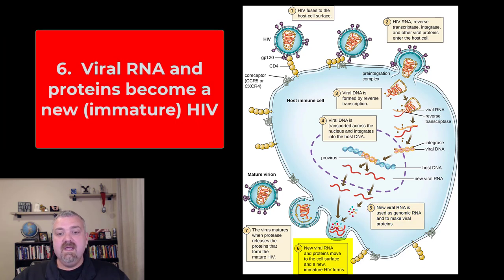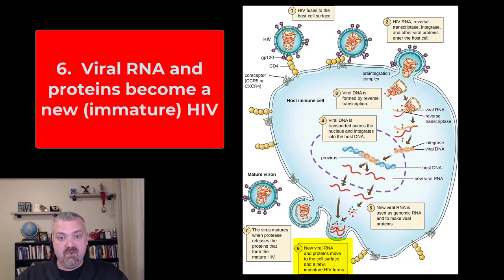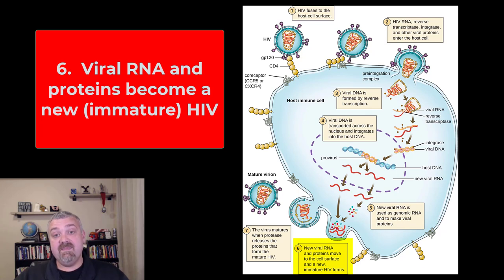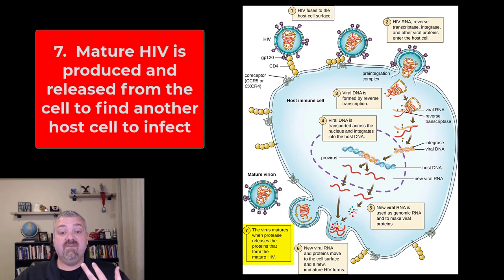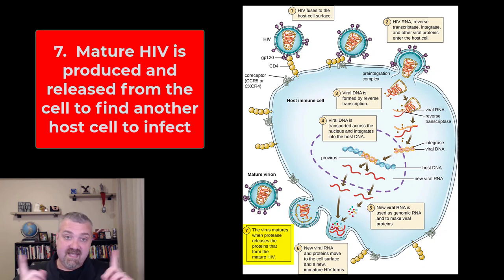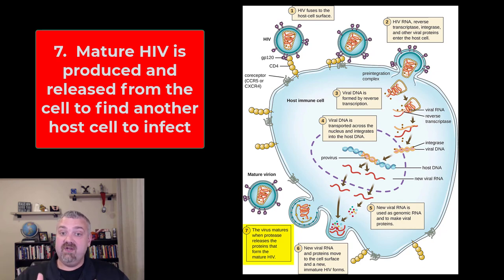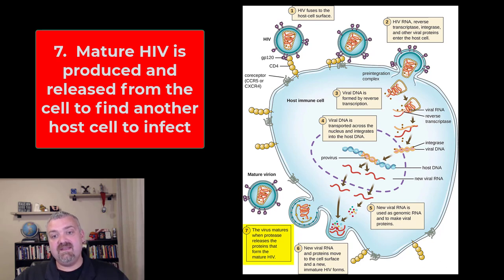Step six: new viral RNA and proteins move to the cell surface and form a new immature HIV virus. This is why we have maturation inhibitors — drugs that can hopefully stop the virus from fully maturing. Step seven: the virus matures when proteases release the proteins that form a mature HIV, which then leaves the cell to infect another CD4 positive T cell. We also have tetherins — a class of drugs that try to keep the mature virus from being able to leave the cell and infect another one.